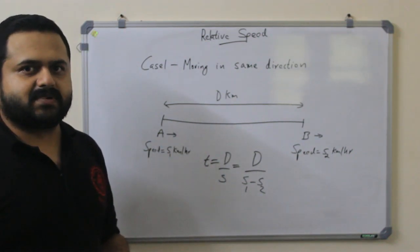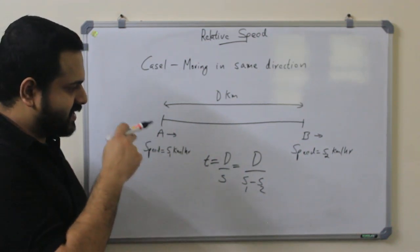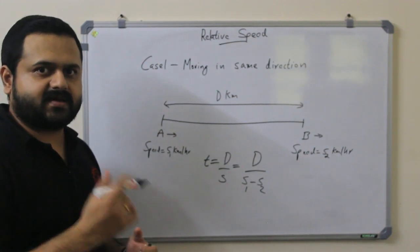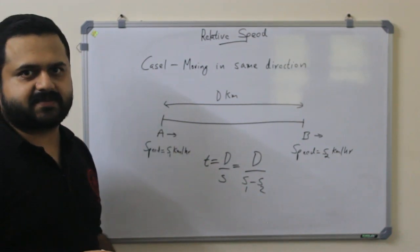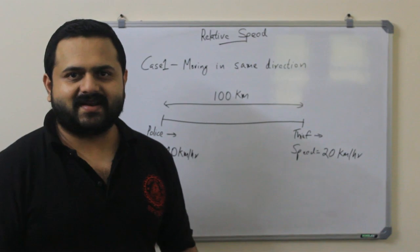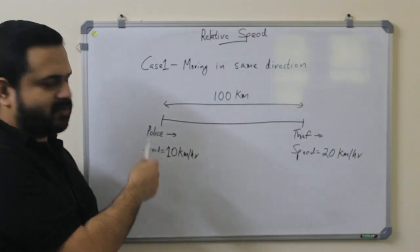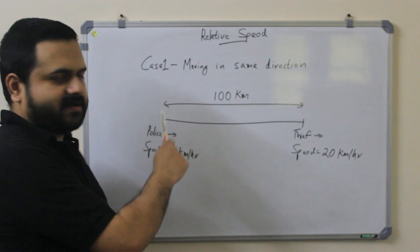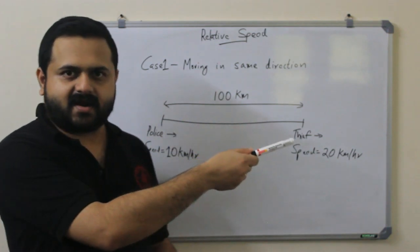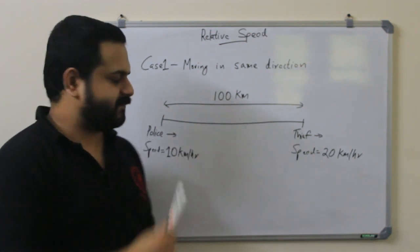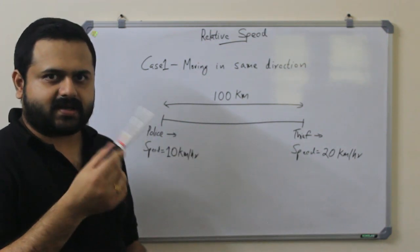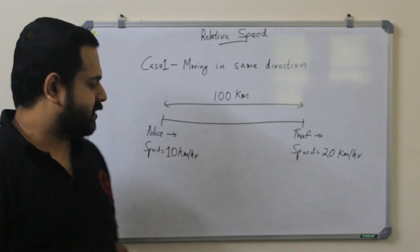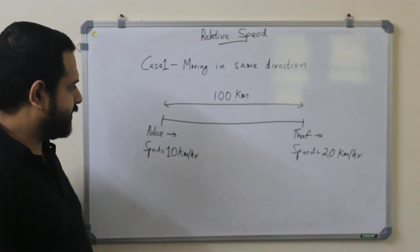Now let's take an example and see how this formula came into being — let's understand the underlying concept. Imagine a police officer is trying to catch a thief, and they are separated by 100 kilometers. Let's look at each different scenario that can arise here.